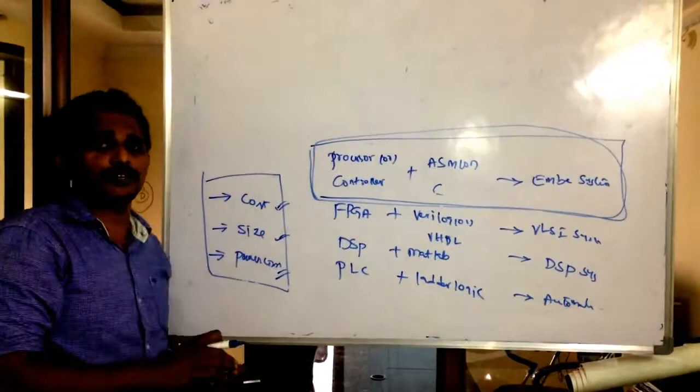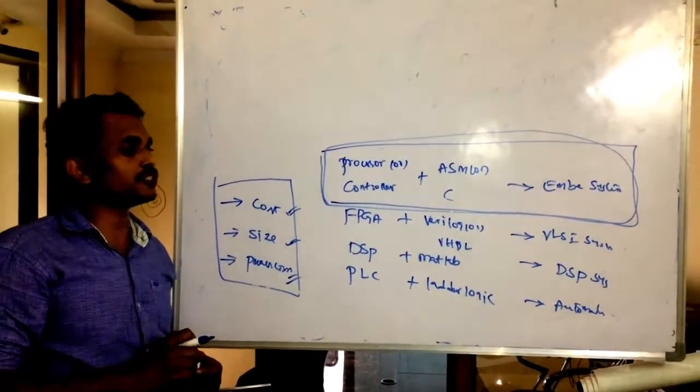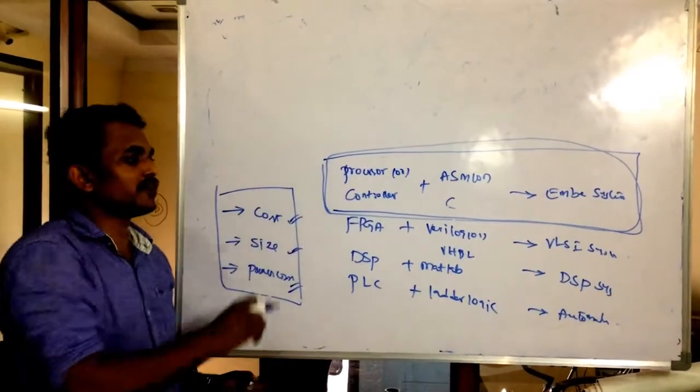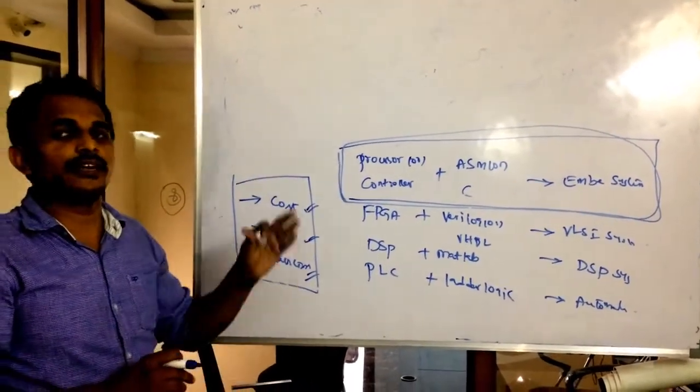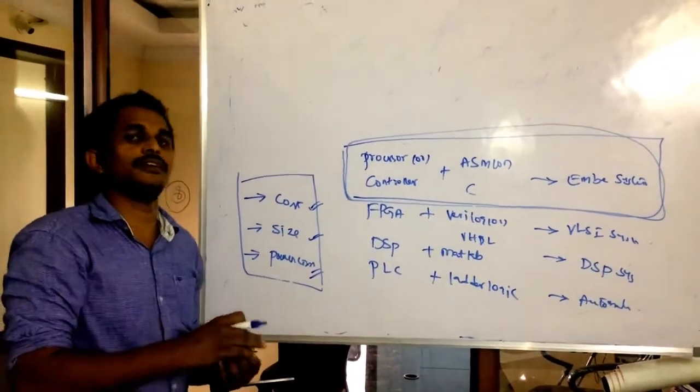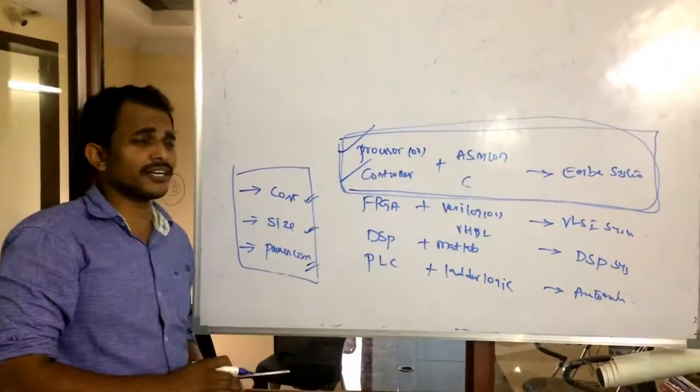Based on these three parameters, your domain will decide towards manufacturing people and general users. That's why embedded is very popular. Coming to this processor's history and who introduced this processor, in embedded domain you will mostly concentrate on processors.